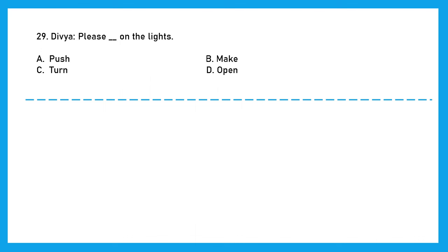Question 29. Divya: Please blank on the lights. Push, make, turn, or open. We use turn on when we have to switch on the lights. So please turn on the lights. Question 30. Mother: How do you feel today? Raj: I feel blank. Better, tiring, happily, or sleep. Now here we are comparing from yesterday. Today how Raj is feeling. So we will use the comparative adjective over here and it is better. I feel better. Option A is the right answer.